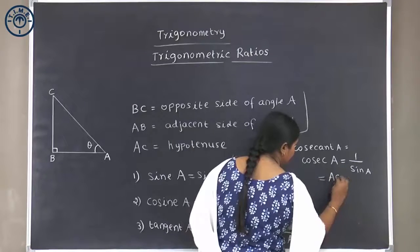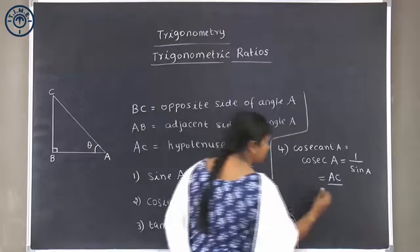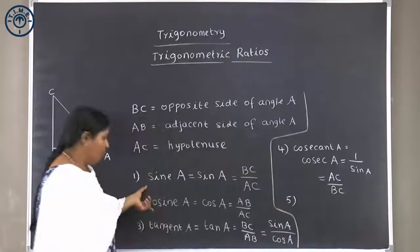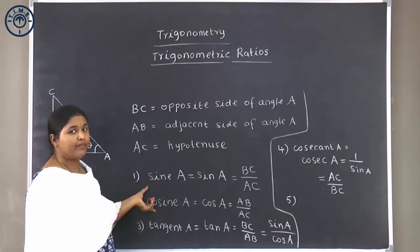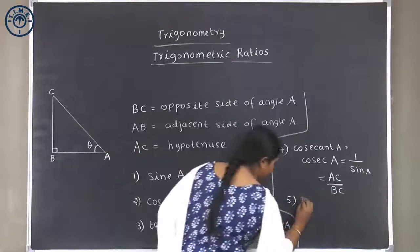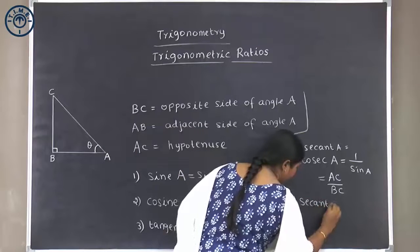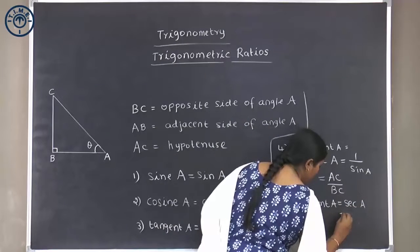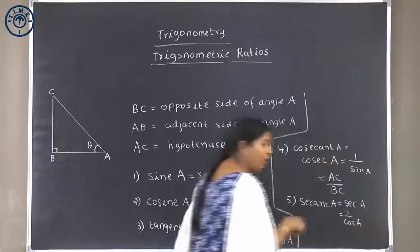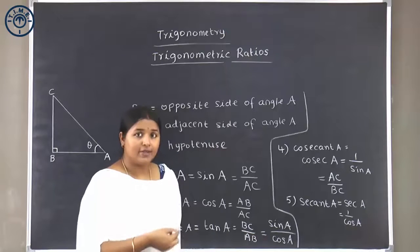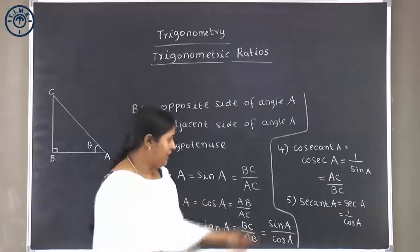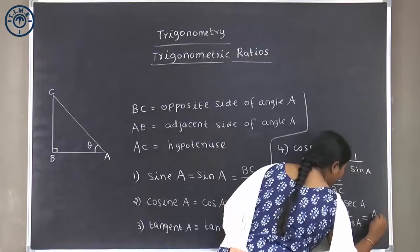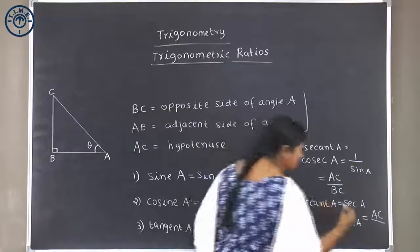The hypotenuse is AC and the opposite side is BC, so cosec A equals AC by BC. The multiplicative inverse of cosine A is referred to as secant A, written as sec A. Secant A is equal to 1 over cos A. Since cos A is adjacent side by hypotenuse, secant A is hypotenuse by adjacent side, which is AC by AB.